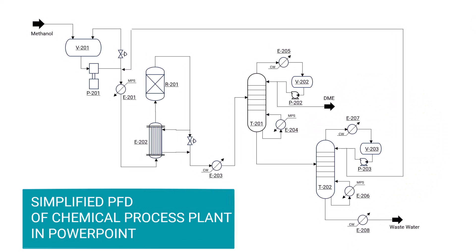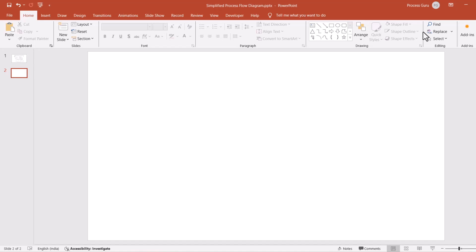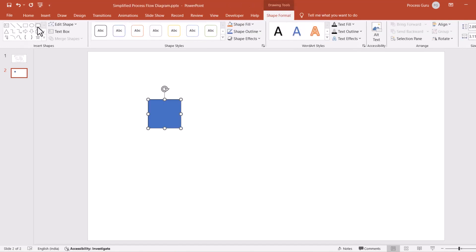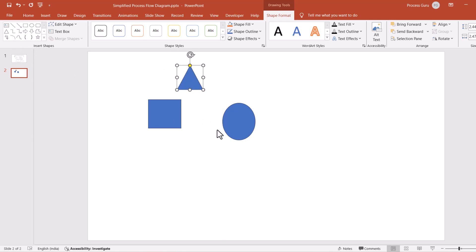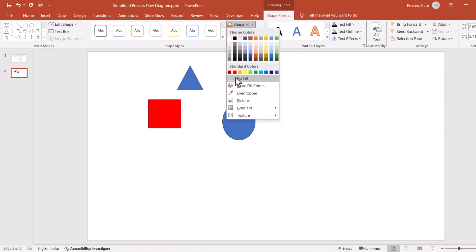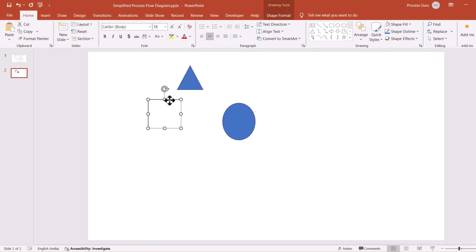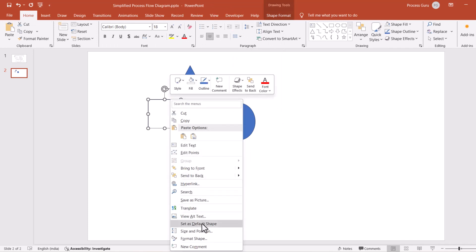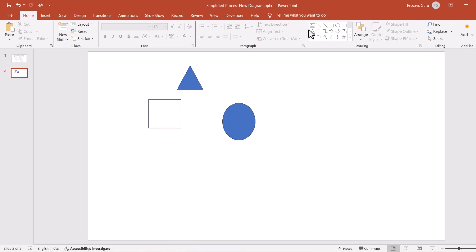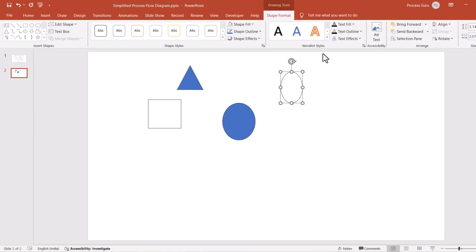So without further ado, let's start creating a simplified PFD in PowerPoint. Whenever you open a new PowerPoint file and start using shapes, they are typically pre-filled with a default color. We need shapes without any color, so what we would do here is just convert one of the shapes to have no color, and with a right-click, select 'Set as Default Shape'. Now any new shape that you put inside your canvas will be without any color.